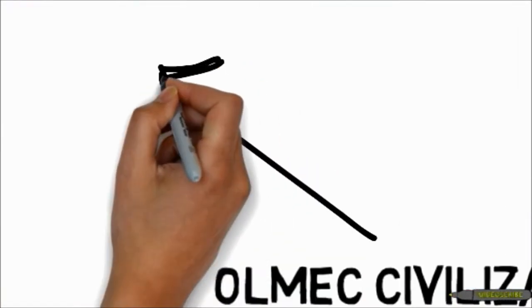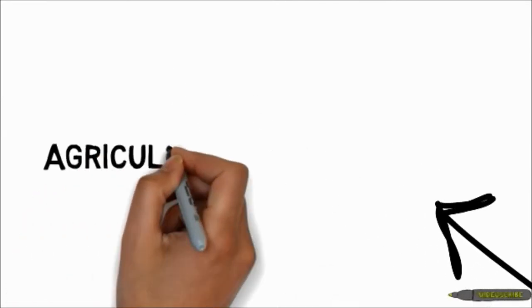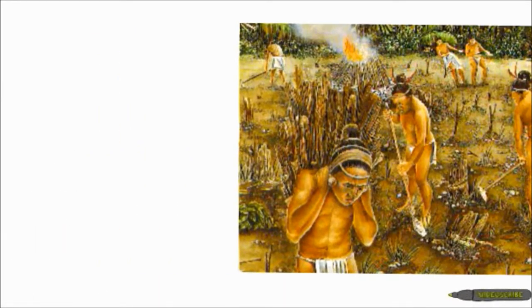Growth and development were able to happen for them through the advances in agriculture with corn, beans, and squash.